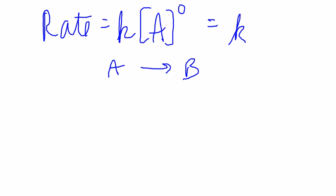Here, if it's A going to B, and it's independent of A's concentration, how could this even happen?